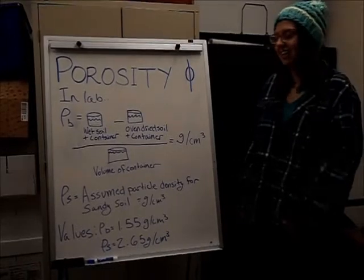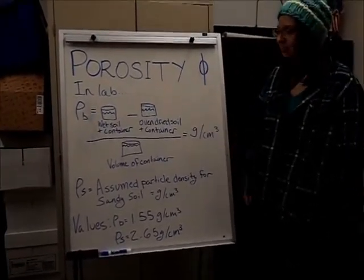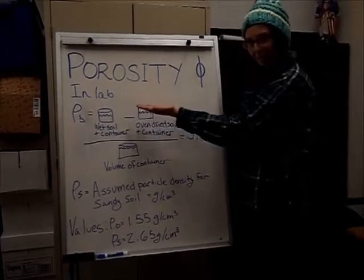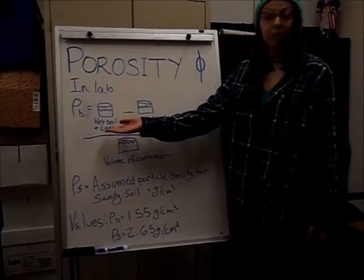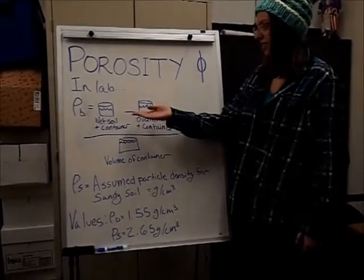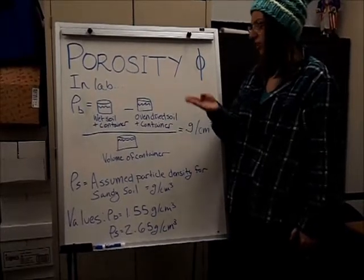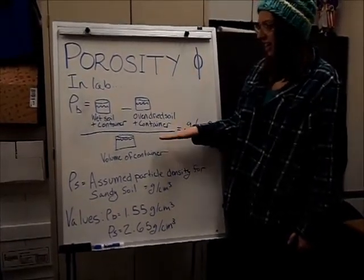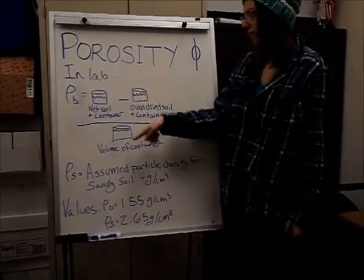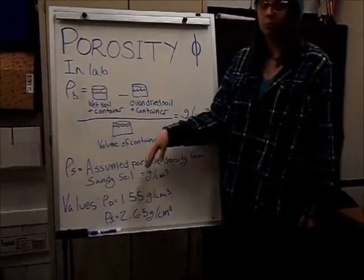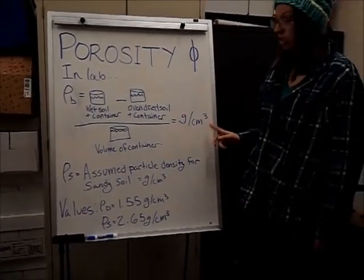My name is Wednesday, and I'm going to take you through how to find bulk density and particle density. So in the lab, you will measure bulk density by taking a container filled with wet soil and subtracting that by the same container with the same soil, only the soil has been oven dried. And you'll divide that over the volume of the container used. It's the same container the whole time. So when you get that, you'll get grams over centimeters cubed.